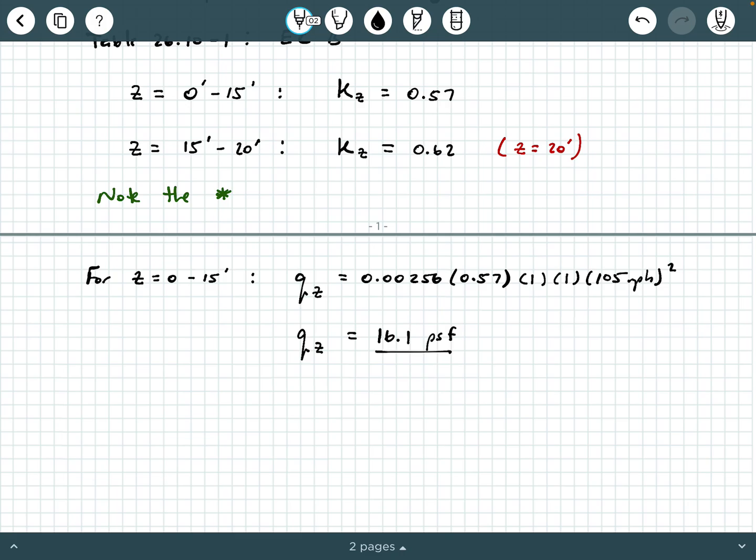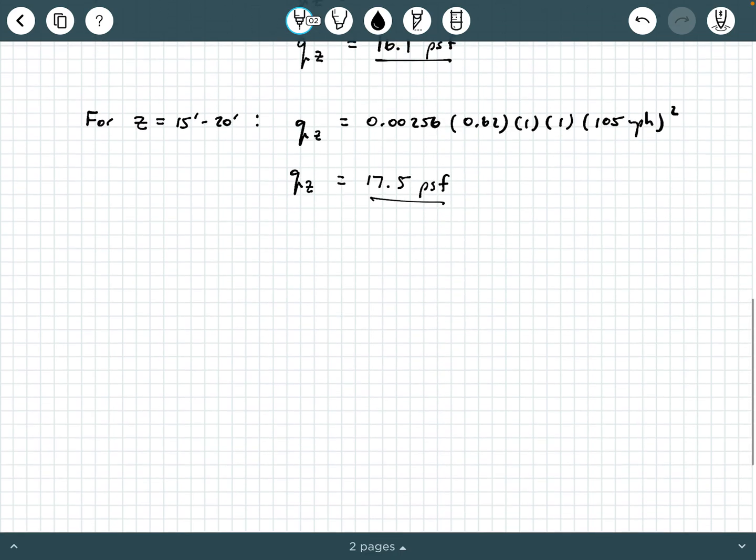And so that's one of our values. And then the last value is going to be for Z equals 15 feet to 20 feet. We're going to say QZ equals 0.00256 times 0.62 times 1 times 1 times 105 miles per hour squared. And that QZ is going to end up being about 17.5 PSF.